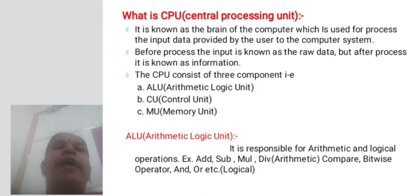What is CPU? It is known as the brain of computer which is used to process the input data provided by the user to the computer system. Before the process, the input is known as raw data but after the process it is known as information. The CPU consists of three components: ALU, CU, and MU.